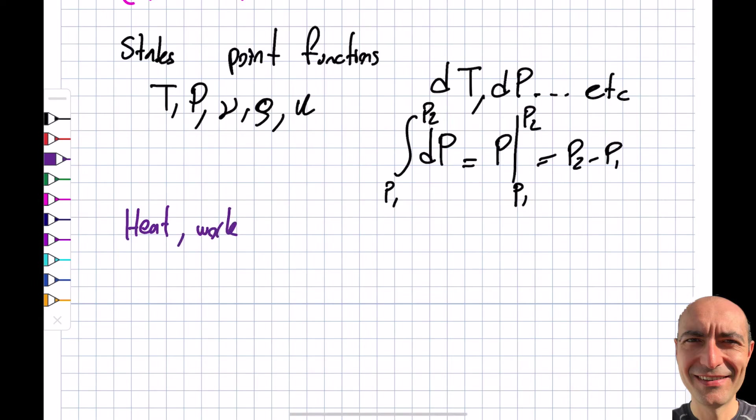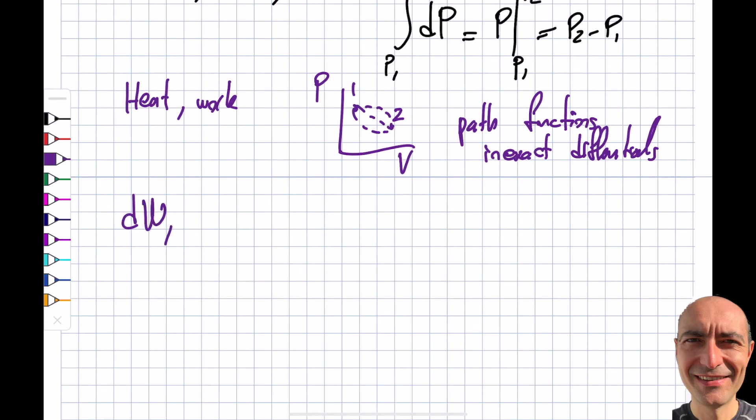Heat and work—heat transfer and work—are path functions. It depends on my path. I don't want to talk a lot about it, but if I have a PV diagram, underneath this is gonna give me the boundary work. It really depends how I go from state one to state two—if I go like this versus like that, I'm gonna get different amounts of work from the system. So this is really path dependent. These are path functions, and path functions are weird in mathematics. They are highlighted by inexact differentials. So I'm not gonna use dW or dQ because these are inexact differentials. I will have del W, del Q instead.